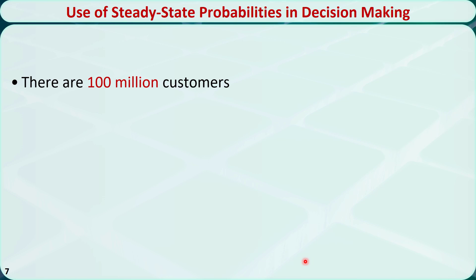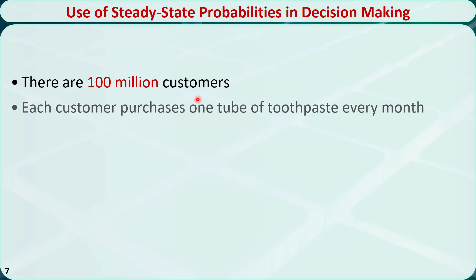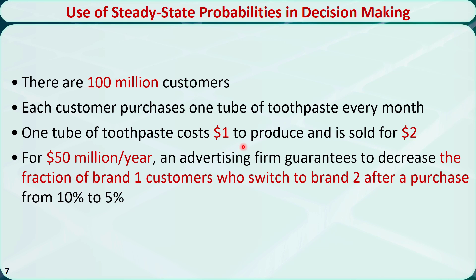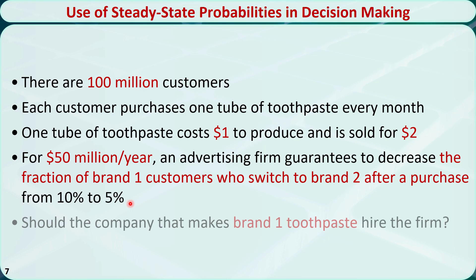The steady state probabilities can be used in the decision-making process. Let's revisit the toothpaste brand example. Assume there are 100 million customers, each purchasing one tube of toothpaste every month. One tube costs $1 to produce and is sold for $2, so the profit is $1 per tube. For $50 million per year, an advertising firm guarantees to decrease the fraction of brand 1 customers who switch to brand 2 after a purchase from 10% to 5%. Should the company that makes brand 1 hire the firm?